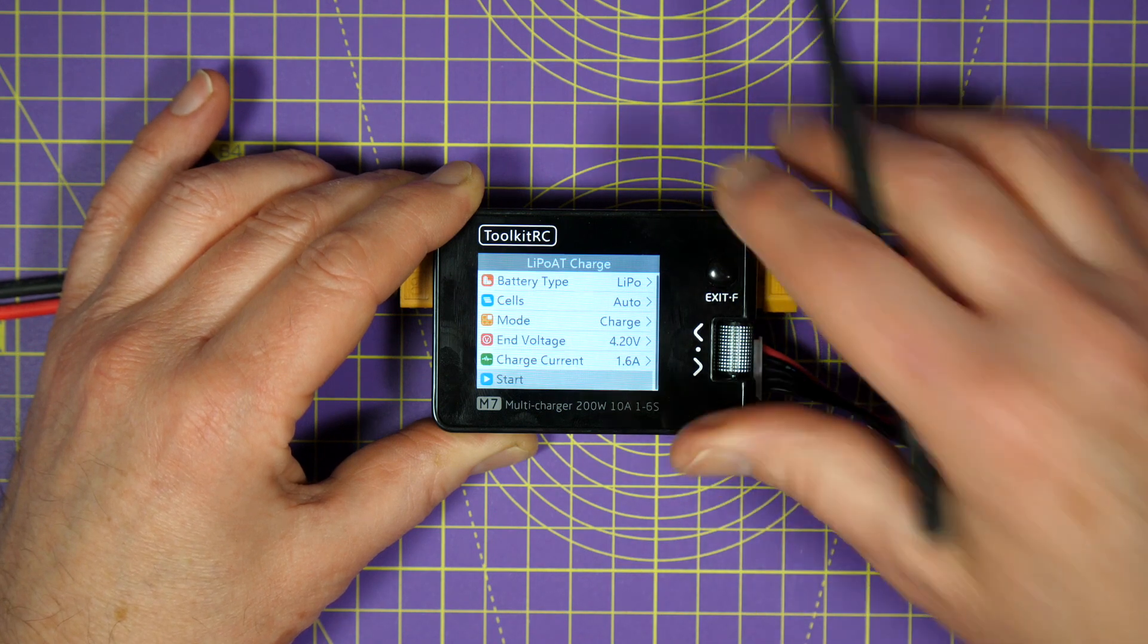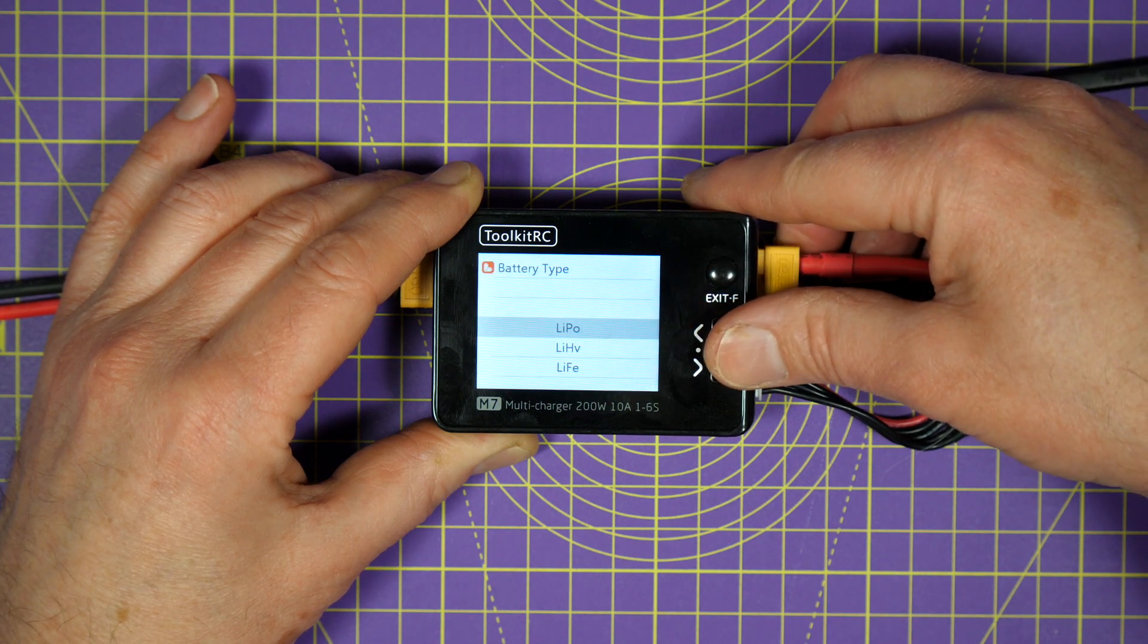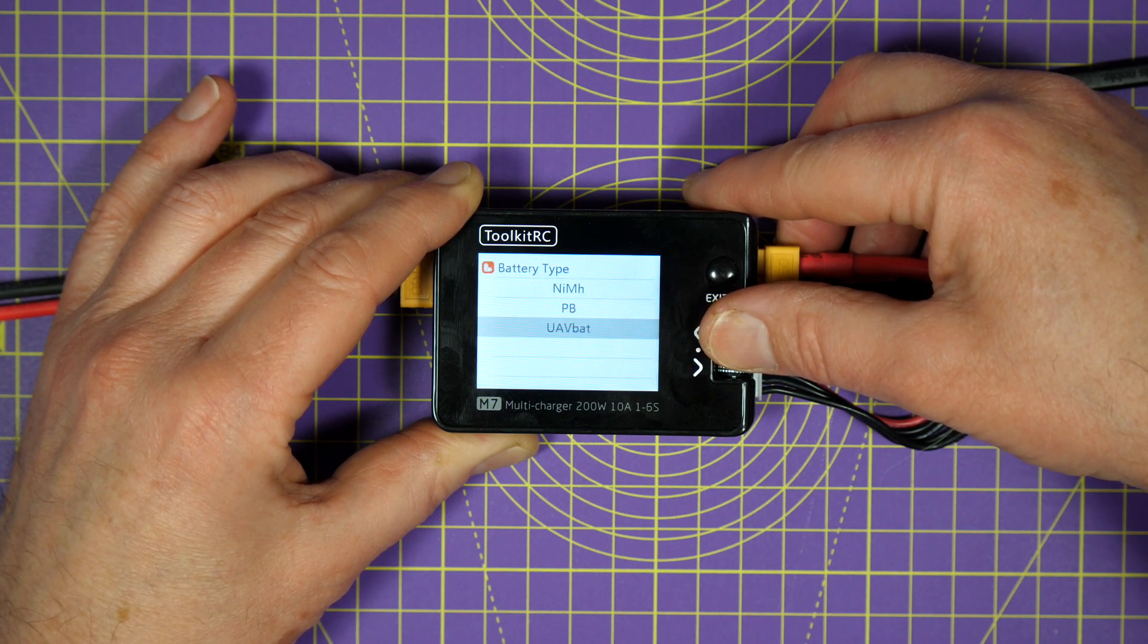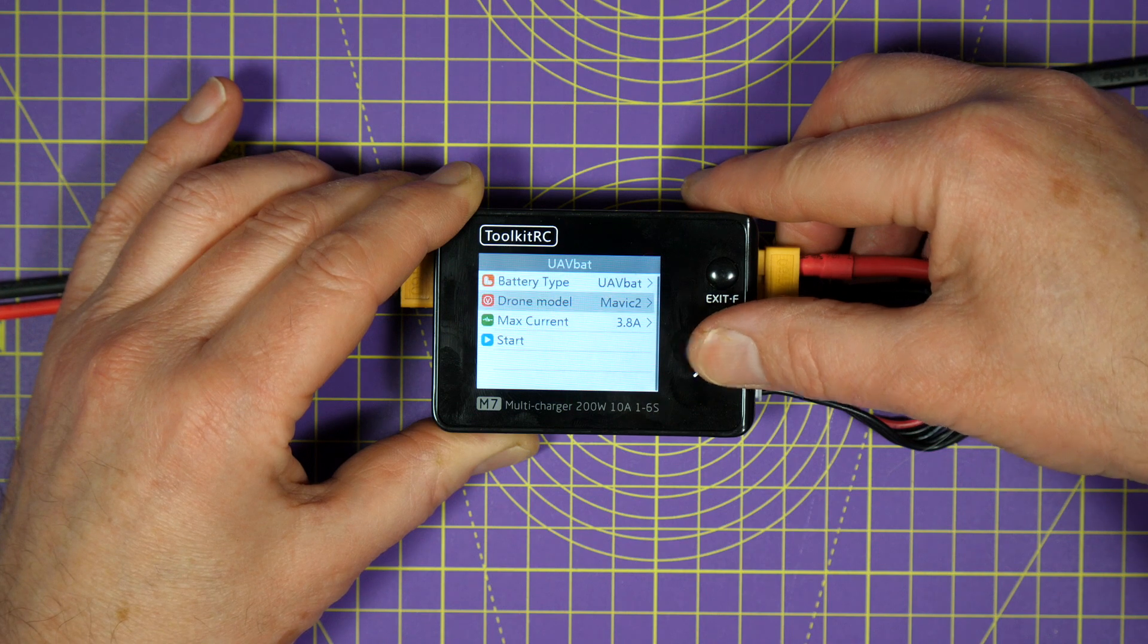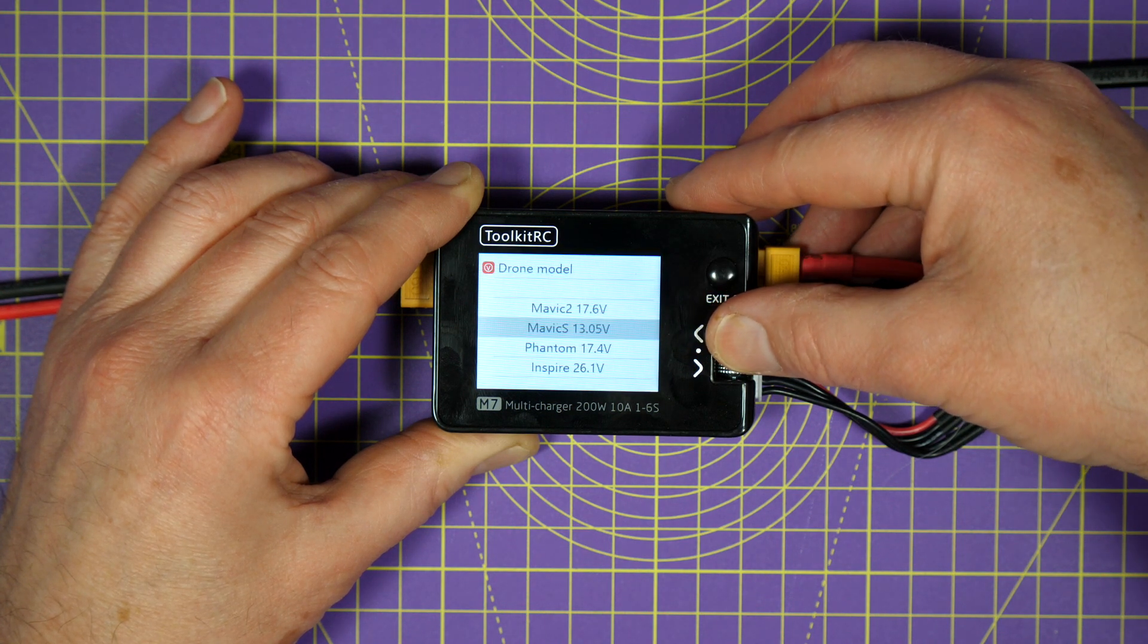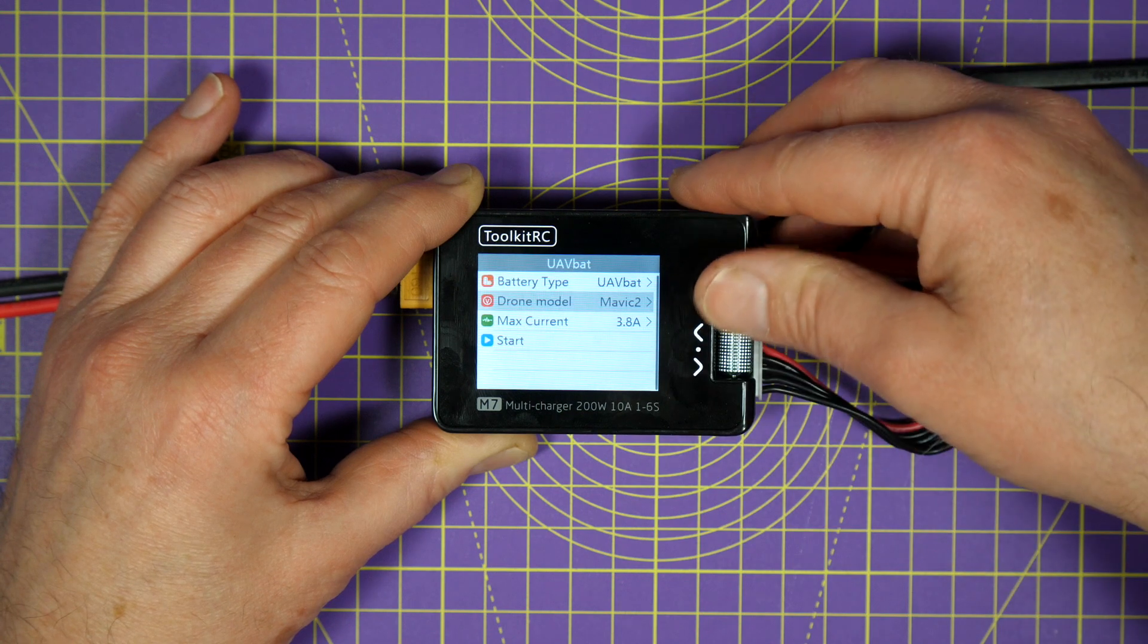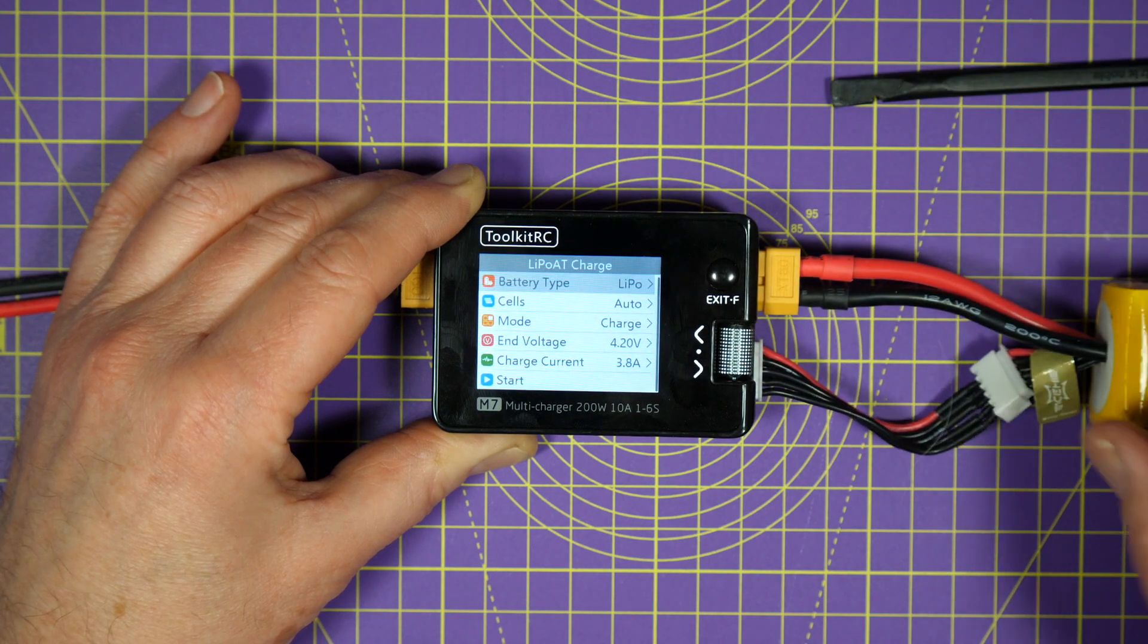This takes us into the charge screen. We pick a battery chemistry: LiPo, high voltage LiPo, lithium iron, lithium-ion, nickel metal hydride, lead acid. I'm glad to see that they've kept the UAV battery mode. Very useful, this. It allows you to use this little box here to charge DJI batteries. So we can have Mavic, Spark, Phantom, and Inspire. I use those quite a bit on some of my other chargers, particularly the M6D charger.